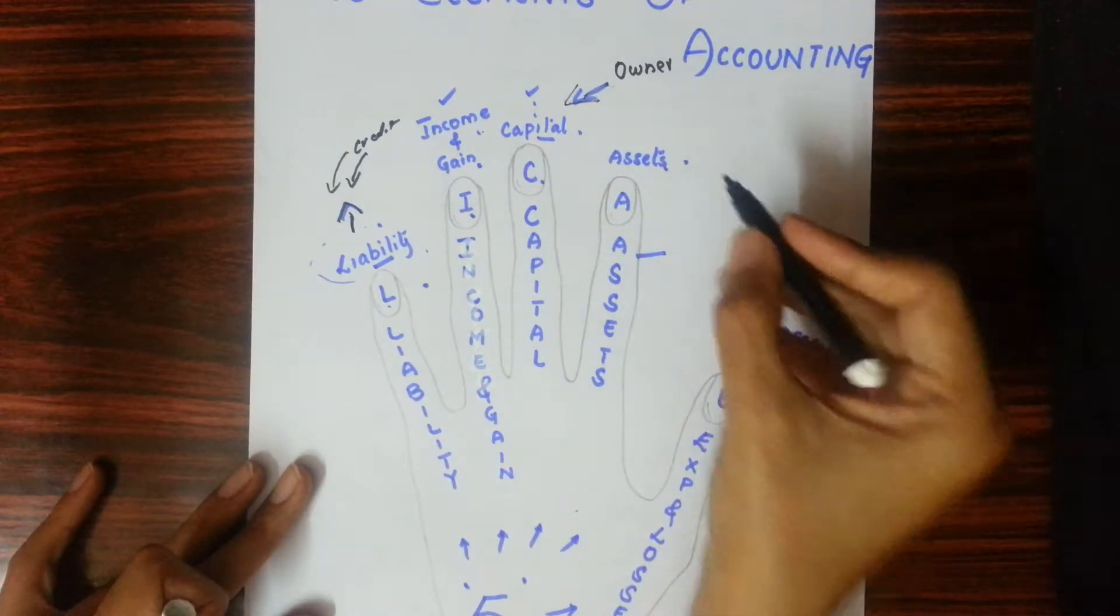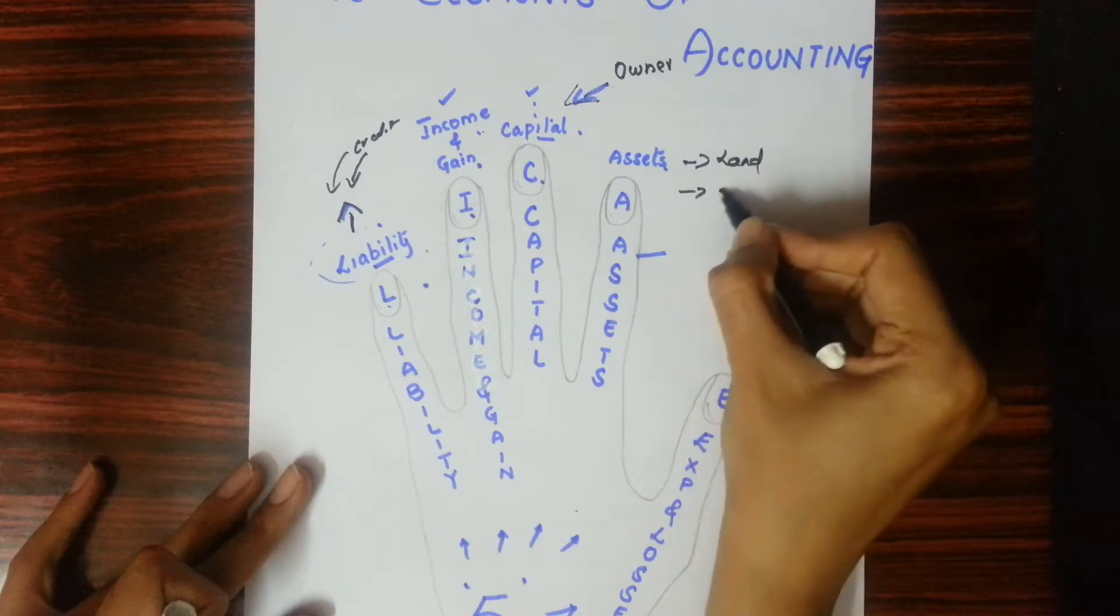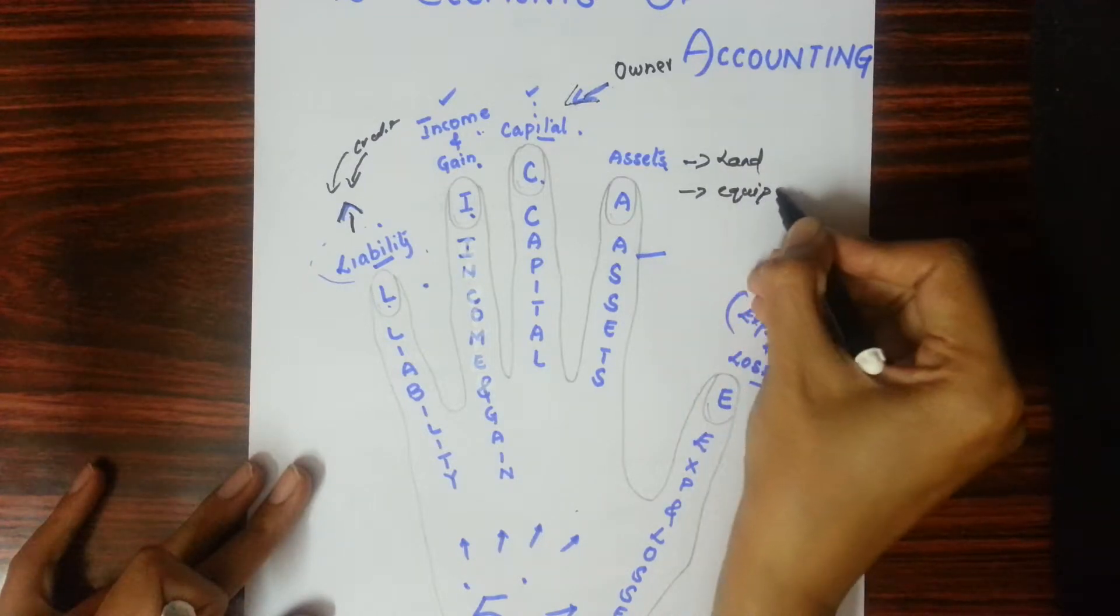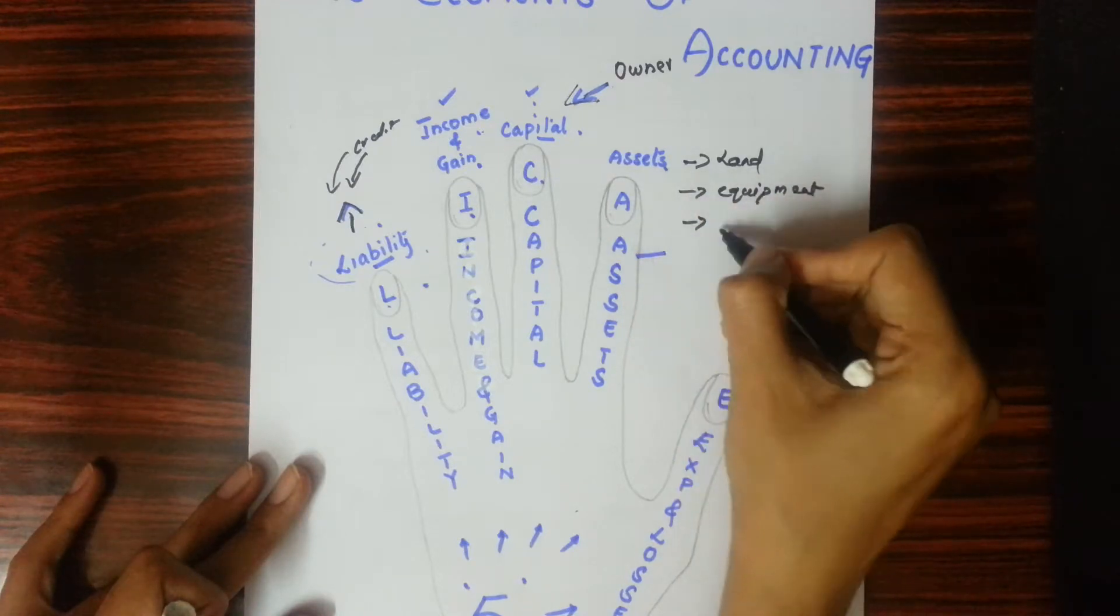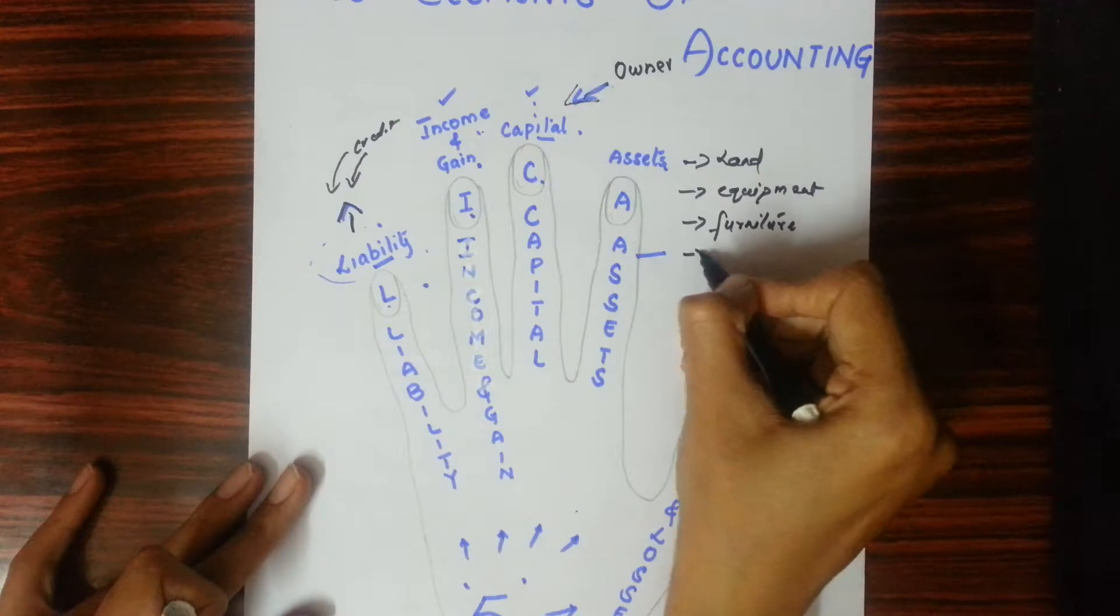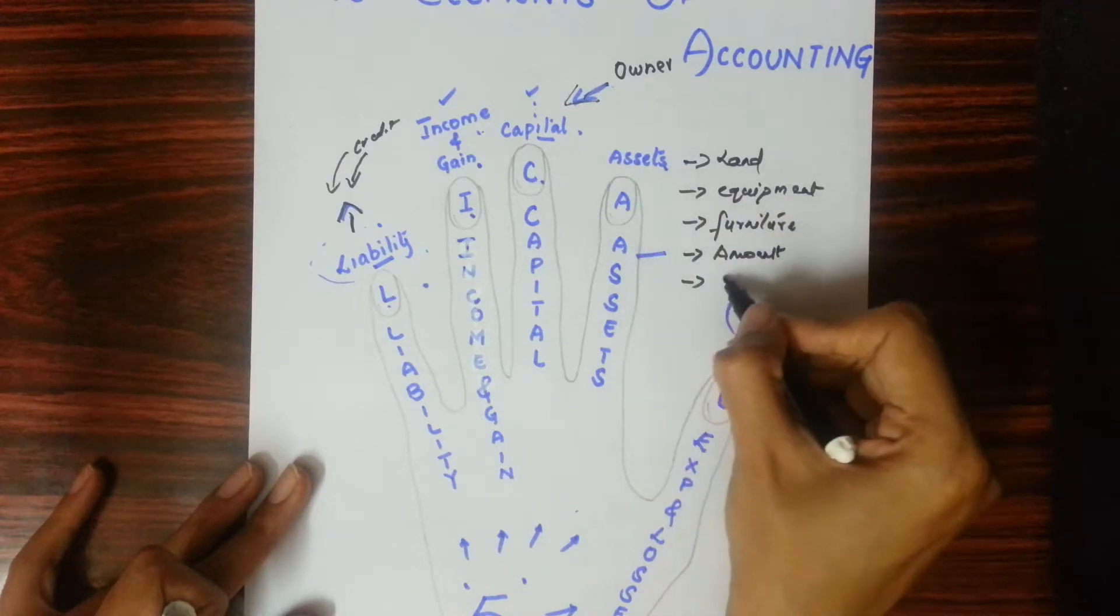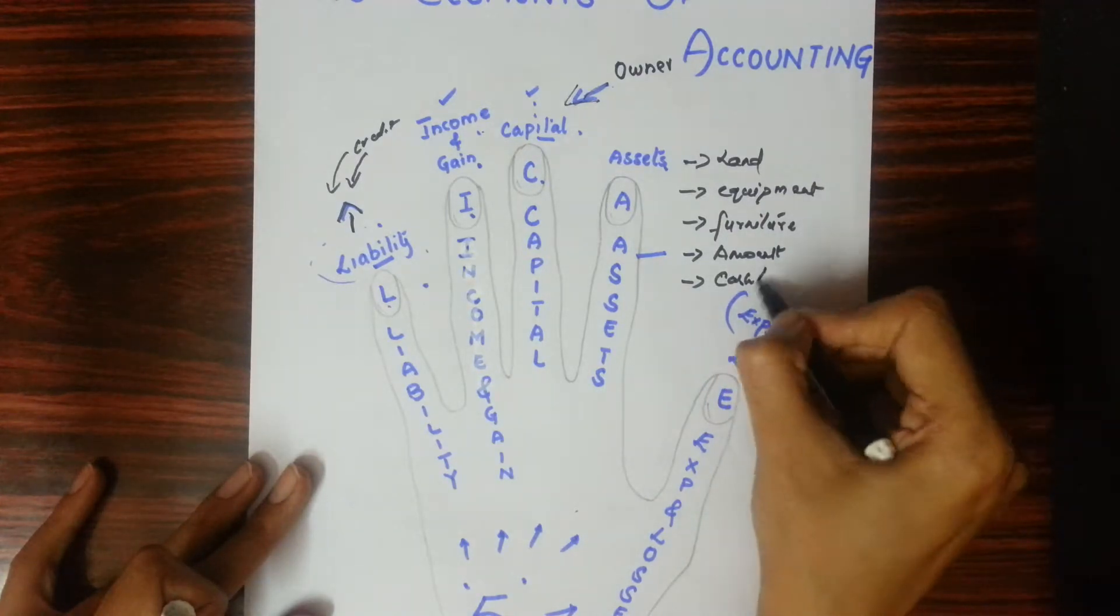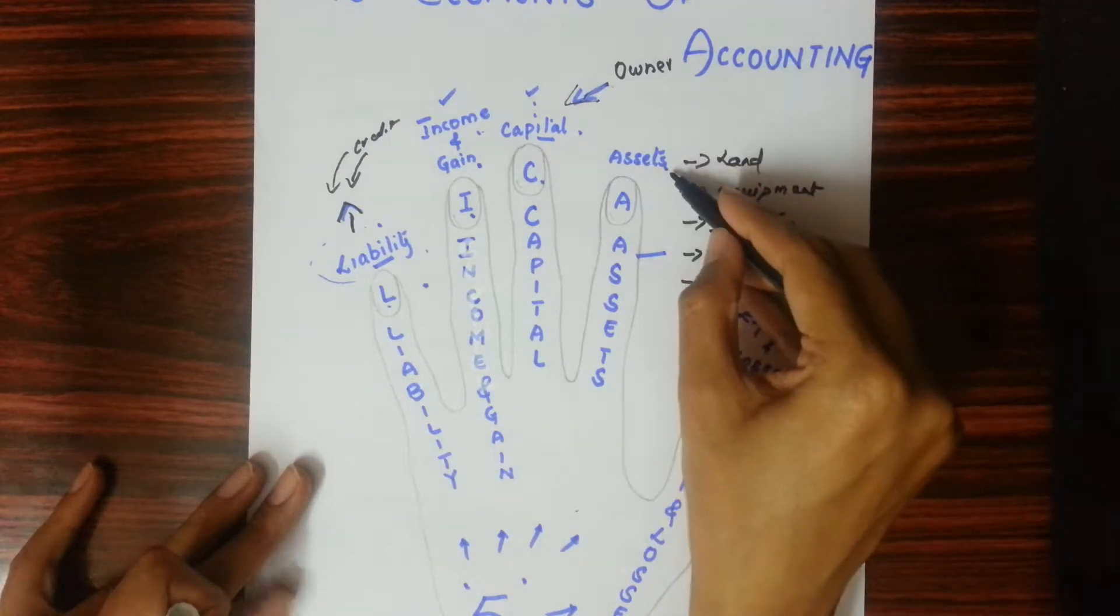Assets - any property of the business, whether it is land, or any equipment, or your business furniture, or if you have to receive amount from somewhere, or in your business bank account there is some cash, in the bank there is cash, in your hand there is cash, wherever it is - all these things come under assets.